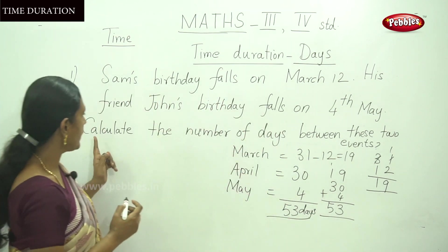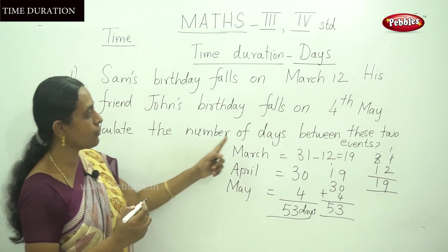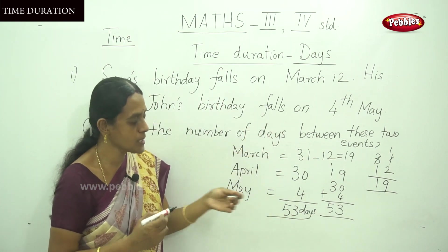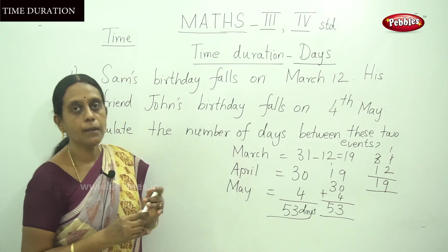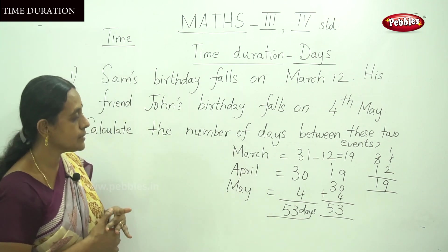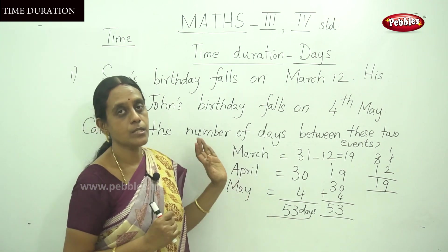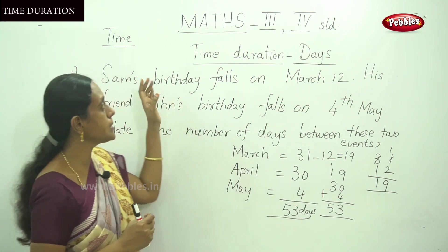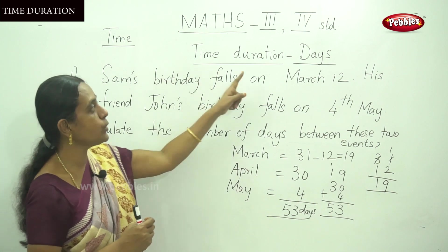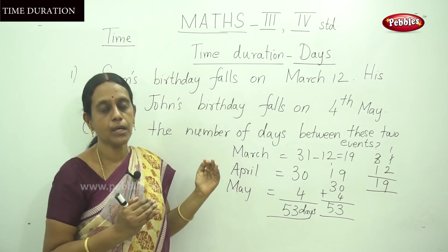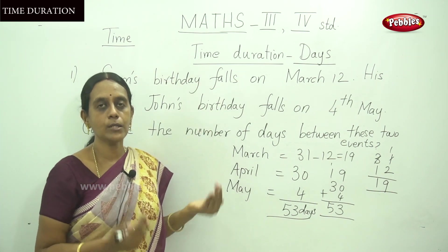So how to calculate the number of days between these two events — the total number of days is 53 days. This is the time duration days calculation method.